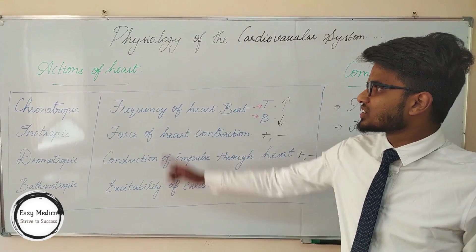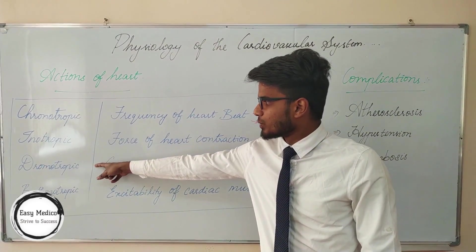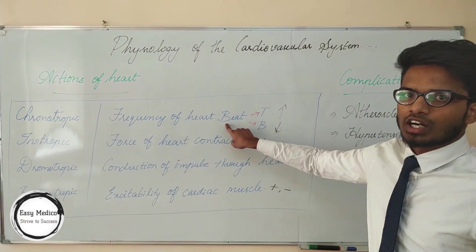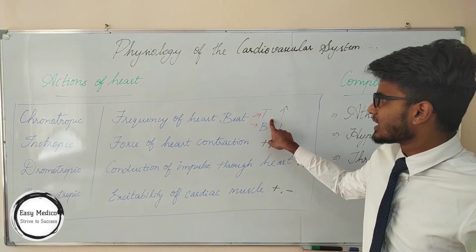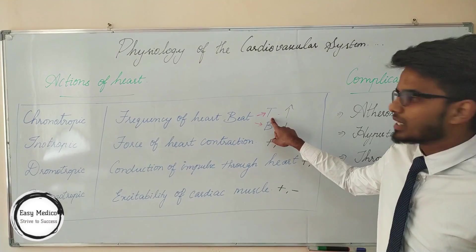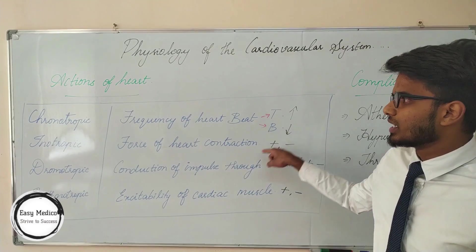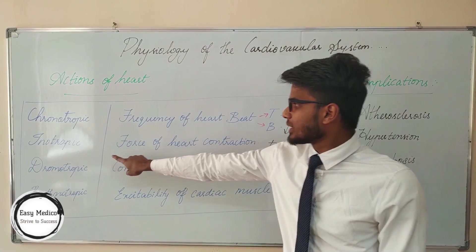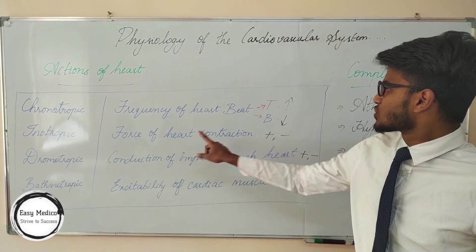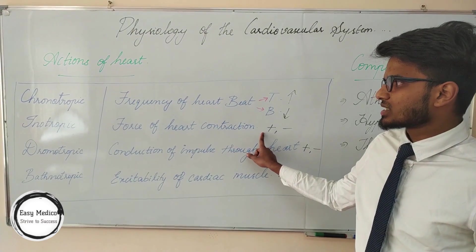We will be discussing the actions of the heart. There are four main actions: chronotropy, inotropy, dromotropy, and bathmotropy. Chronotropy depends on the frequency of the heartbeat — an increase in frequency leads to tachycardia, and a decrease leads to bradycardia. Inotropy depends on the force of heart contraction — more force is known as positive inotropy, and less force is known as negative inotropy.